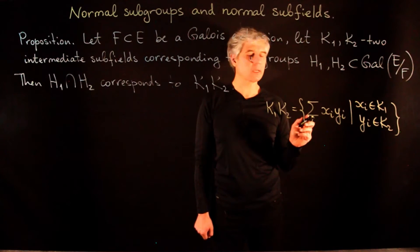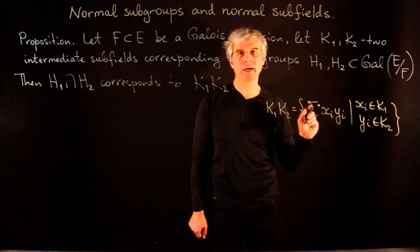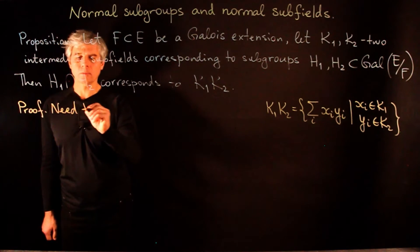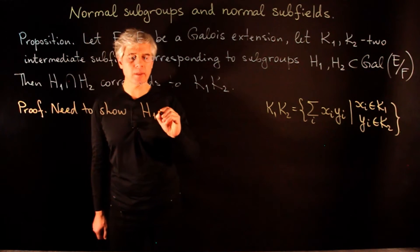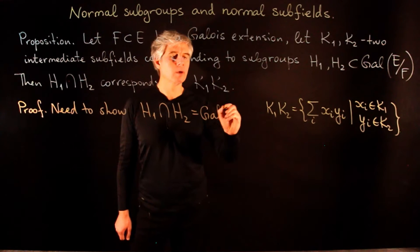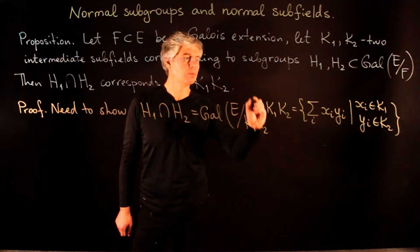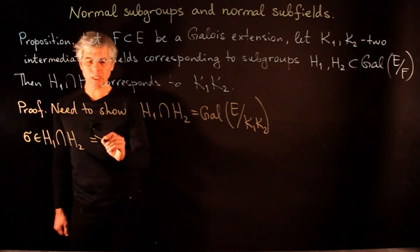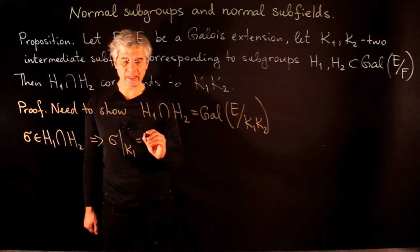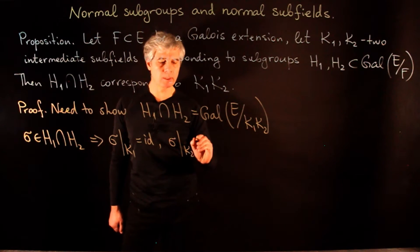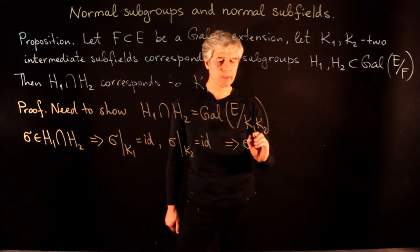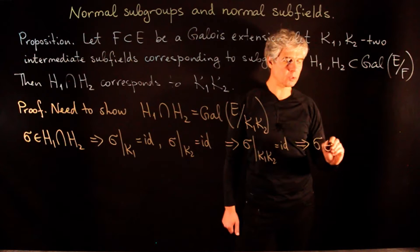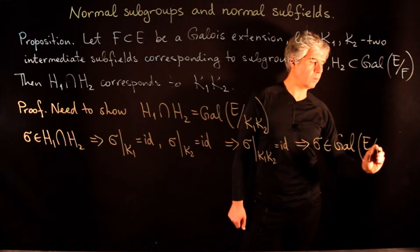Because all extensions here are algebraic, this set is closed under inversion. To prove this proposition, we need to show that H1 intersected with H2 is the Galois group of E over k1·k2. If σ belongs to H1 ∩ H2, this means σ restricted to k1 is the identity and σ restricted to k2 is the identity. But then σ restricted to k1·k2 is also the identity, and thus σ belongs to the Galois group of E over k1·k2.